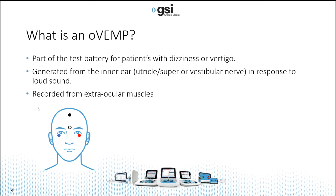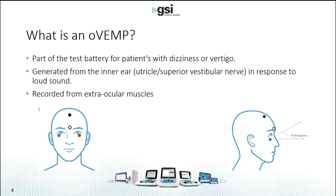For OVEMP, it's also part of the test battery for patients with dizziness or vertigo. It's generated from the inner ear — the utricle of the cochlea — and the superior vestibular nerve, in response to a loud sound or vibration, and it's recorded from the extraocular muscles. Similar to C VEMP, the patient also has to do something during collection: stare with their eyes open upward at least 35 to 40 degrees, or toward the ceiling, for the duration of the test.